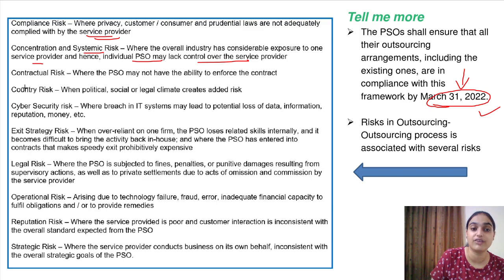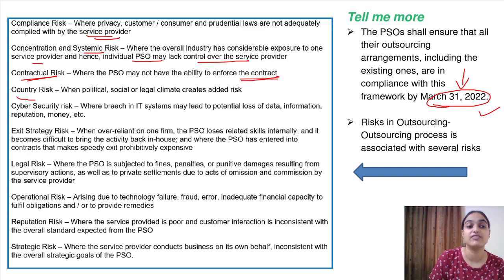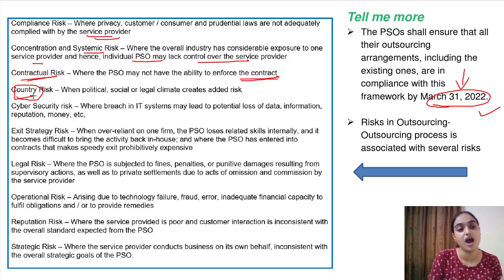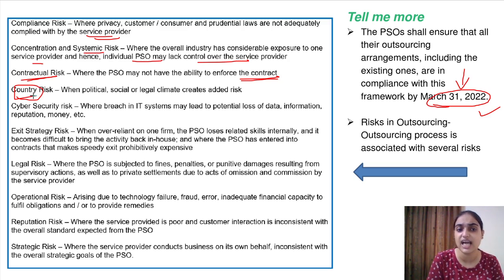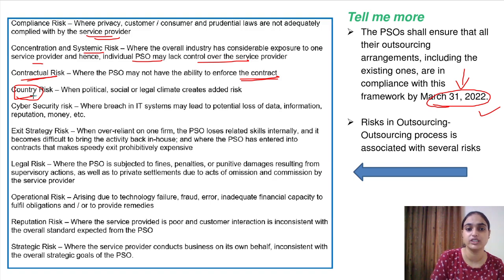There is contractual risk, where whatever contract you have entered into, the PSO may not be able to enforce it. Then there is country risk — in any kind of business activity, there are political risks, social risks, and legal climate risks. Rules and regulations may change and all such things can create problems.